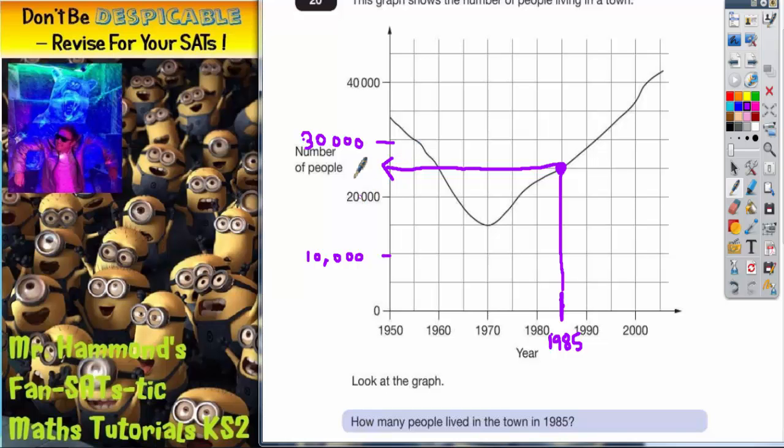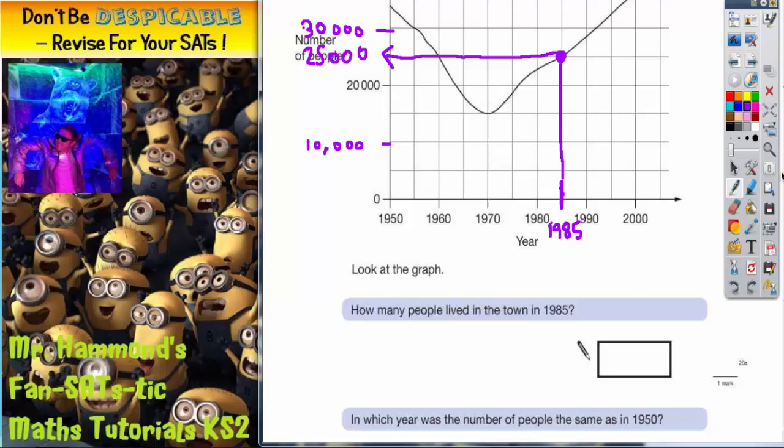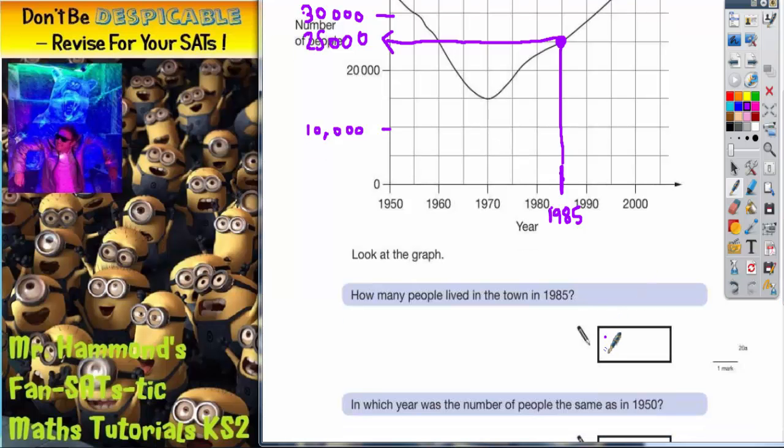Well, if this is 20,000 and this is 30,000, halfway between 20 and 30 is 25. So halfway between 20,000 and 30,000 must be 25,000. So that's going to be the answer for the first part: 25,000.